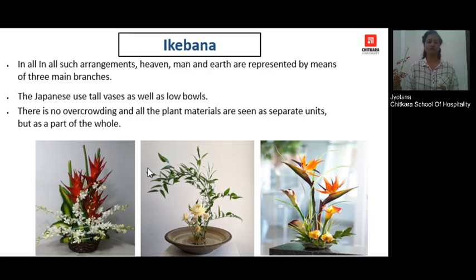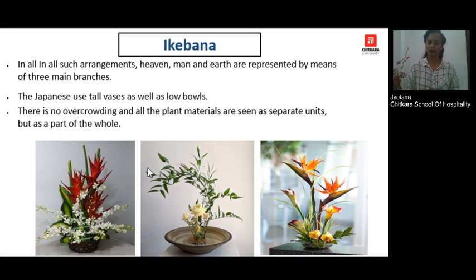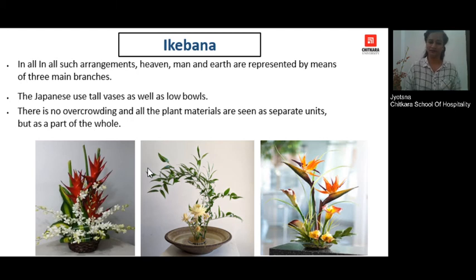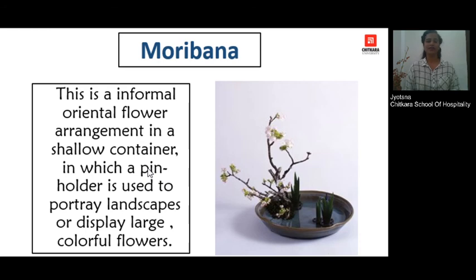Ikebanas generally use shallow or flat containers, which are most preferred, though they also use tall vases or tall containers. Most of the time, to support the plant material, they use a Kenzan — a metallic circular object in which the plant materials are inserted. Next, another very famous Japanese flower arrangement is Moribana. These are generally made in shallow, broad containers, and Kenzan is mostly used. The purpose of Moribana is to depict an entire landscape within the flower arrangement.